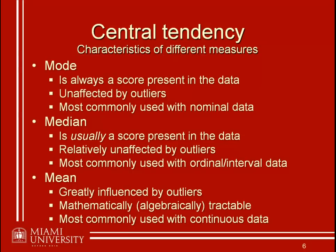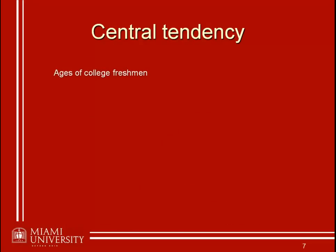You should definitely review these different properties, as they're very important to know. Let's look at a few examples. What if you were doing a study with college freshmen and asked them all for their age? Because age is a continuous measure and we don't have any reason to believe there will be dramatic outliers among college freshmen, we would want to use the mean — continuous data without a risk of many outliers. The mean would certainly be appropriate in this case.